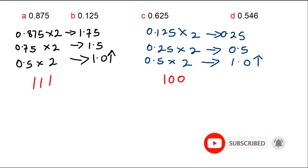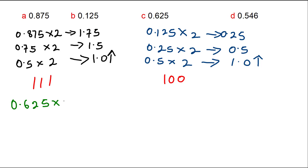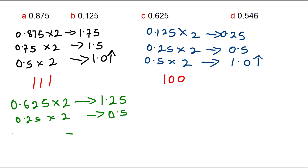Let's move on to example C, which is 0.625. We multiply 0.625 by 2, which gives 1.25. The decimal part is 1, the fractional part is 0.25. We multiply 0.25 by 2, which gives 0.5. We pick 0.5 and multiply it by 2 again, giving 1.0. So 0.625 in binary is 0.101.